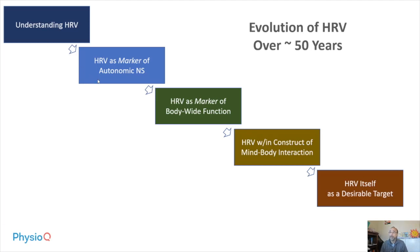The five stages are: understanding HRV; HRV as a marker of autonomic nervous system; HRV as a marker of body-wide function; HRV in the construct of mind-body interaction; and HRV itself as a desirable target. Why these categories have been divided accordingly will become clear when this talk series is over, but it reflects the evolution of our scientific approach to HRV, which has been strongly influenced by the prevailing scientific paradigm of the day.